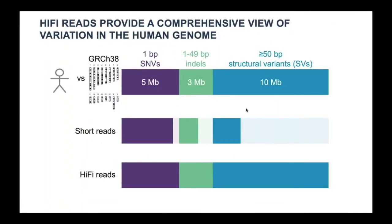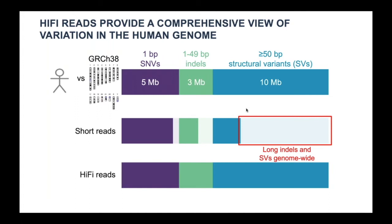Not only can HiFi reads capture all variants, but they can also detect variants that are often missed with short reads. Due to short read lengths, short reads usually miss over 50% of the structural variants, particularly long insertions and variants in repetitive regions of the genome.